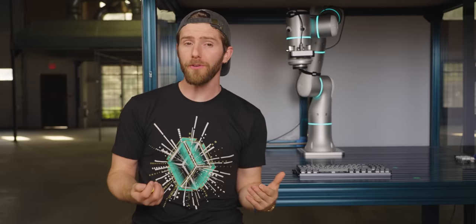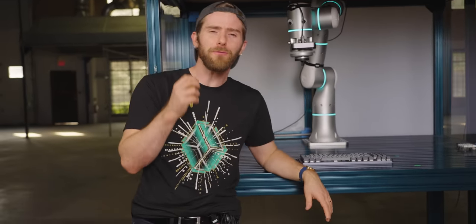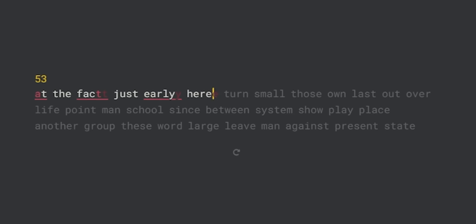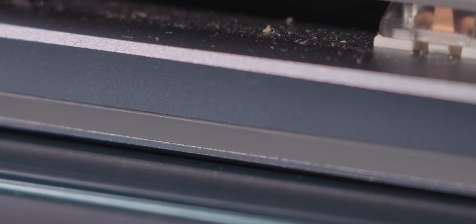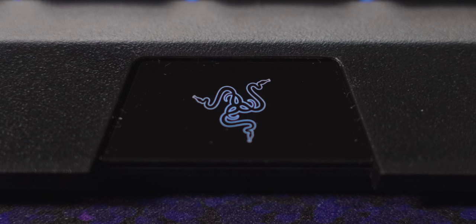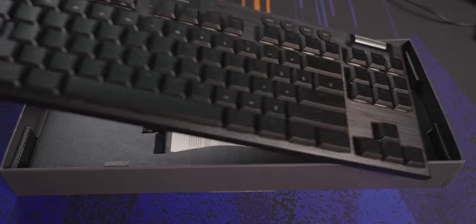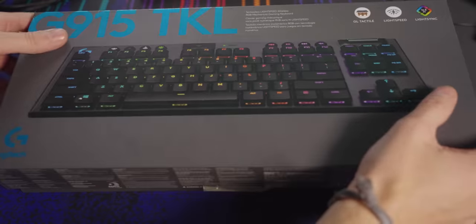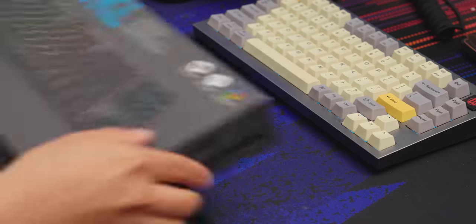When your Corsair K70 Pro or Logitech G915 rolls off the production line, it goes through a series of QC or quality control checks to make sure that every little piece of it is within the manufacturer's specified tolerances. Do the switches work, do they chatter, does the RGB light, does the chassis line up, is the cable frayed, is the logo upside down or off center? All of these things and more are checked before your keyboard goes into the box, out the door, and finally lands on your desk.